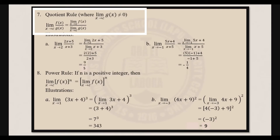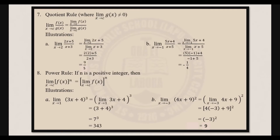Next, let's have the quotient rule, where the limit of g of x as x approaches c is not equal to 0. It states that the limit of f of x over g of x as x approaches c is equal to the limit of f of x as x approaches c over the limit of g of x as x approaches c. Example: find the limit of 2x plus 5 all over x plus 3 as x approaches 2. That equals the limit of 2x plus 5 as x approaches 2 over the limit of x plus 3 as x approaches 2. Applying the sum rule: numerator gives 2 times 2 plus 5, denominator gives 2 plus 3, so simplified that's 9 over 5.